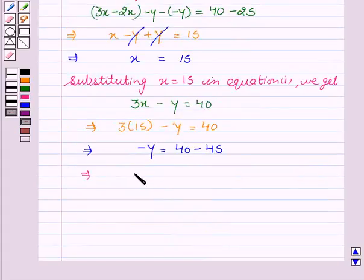This implies minus Y equal to minus 5. Minus minus cancel out. This implies Y equal to 5.